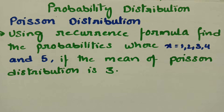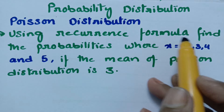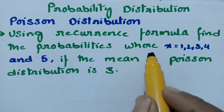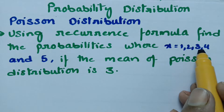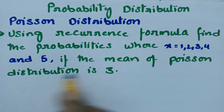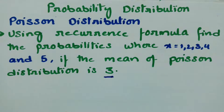Today's video is on Poisson distribution. We are going to solve a problem using the recurrence formula — specifically, find the probabilities where x is equal to 1, 2, 3, 4, and 5, given that the mean of the Poisson distribution is 3.